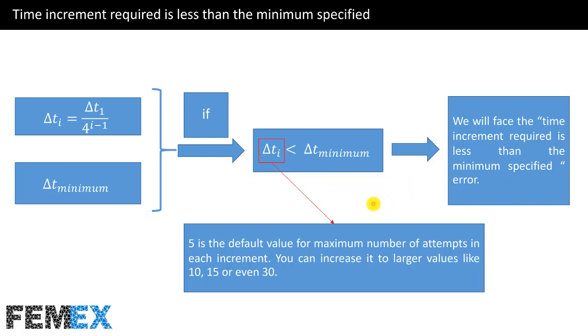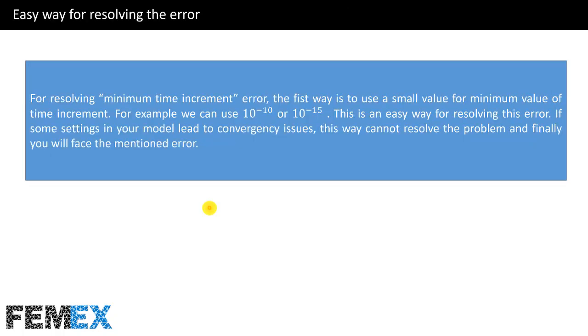The default value for maximum number of attempts in each increment is 5. You can increase it to larger values like 10, 15, or even 30.